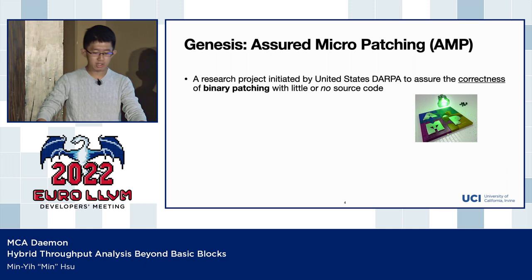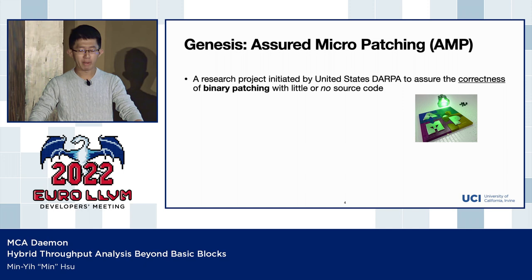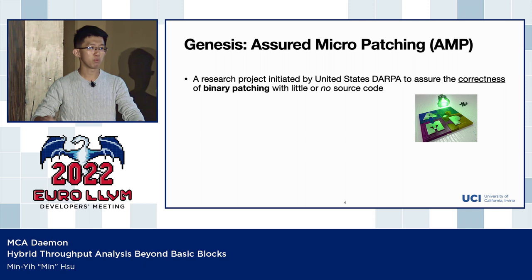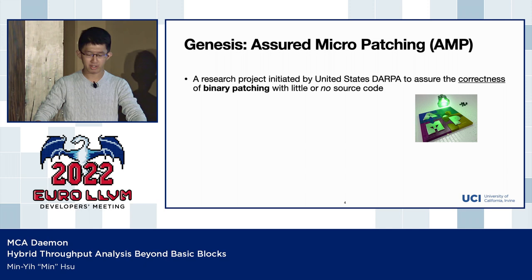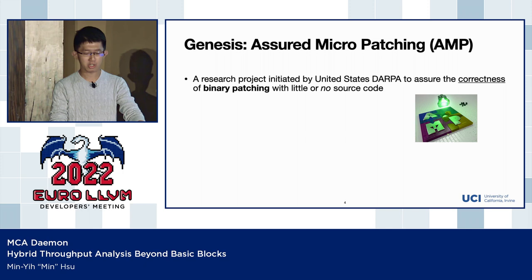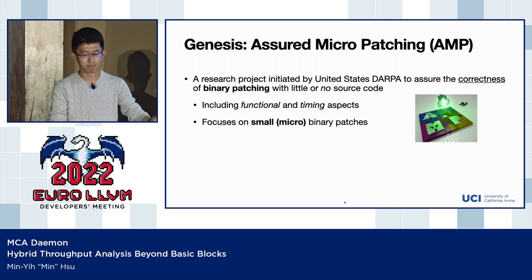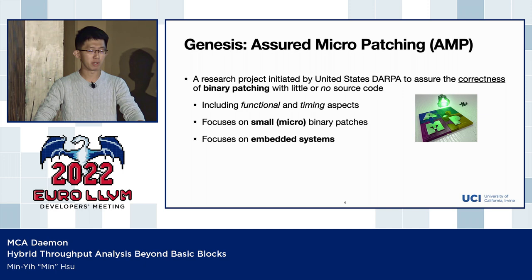What was the motivation behind this tool? The genesis of MCADmon goes back to a project initiated by United States DARPA — Assure Micropatching, or AMP. Imagine today you want to fix an issue in a program but you don't have the source. Maybe you lost the source code but still want to patch it. In that case, you can only patch directly to the binary. This is the binary patching we're talking about. The AMP project is devoted to studying the correctness process of binary patching with little or no source code, including functional and timing aspects. And the project focuses on small binary patches — that's why it's called micropatching.